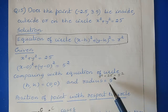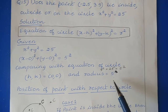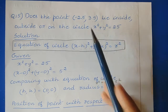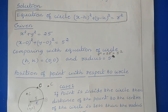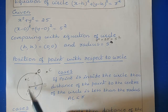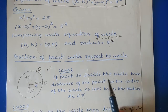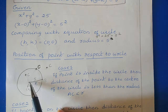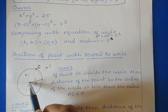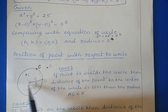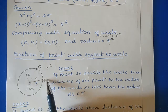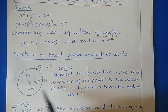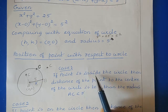Now that we know the center and radius, we can determine which region the point lies in. There are three cases. Consider a circle with center A and radius AB. If a point C is inside the circle, then the distance AC is less than the radius AB, so radius is greater than AC.